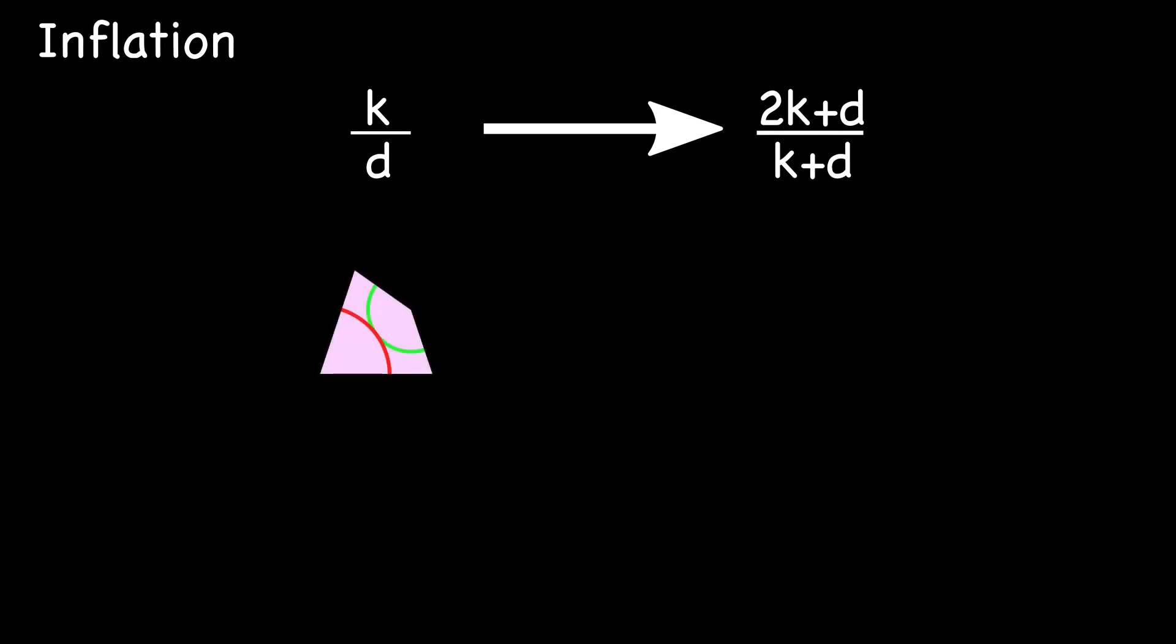Now we can see why that is going to happen. Here's a kite. And under the process of inflation, that kite is responsible for two kites and two half darts. Two kites and a dart. There's your numerators.